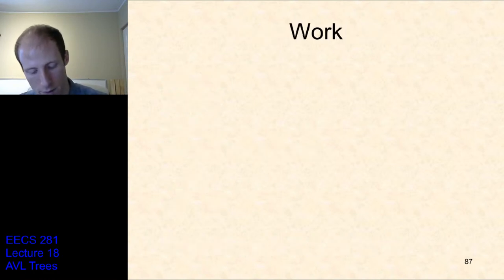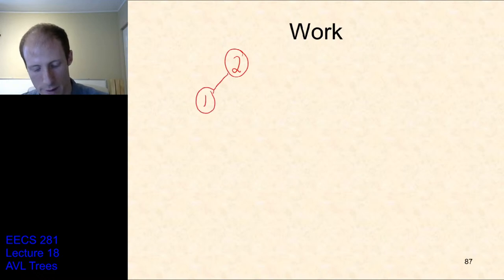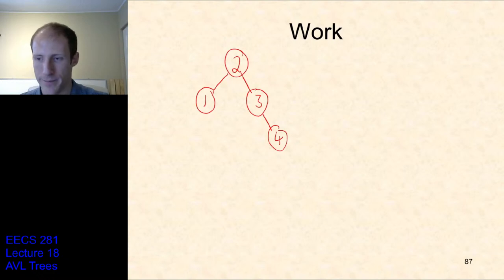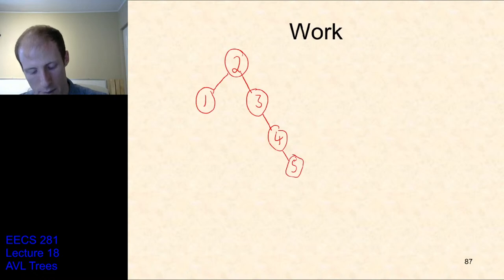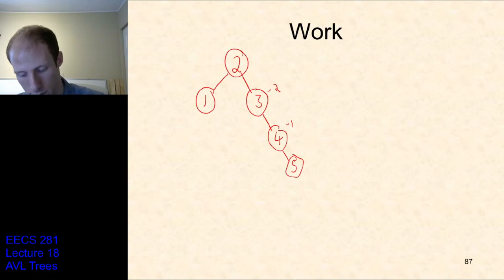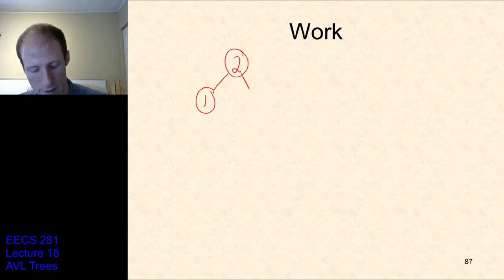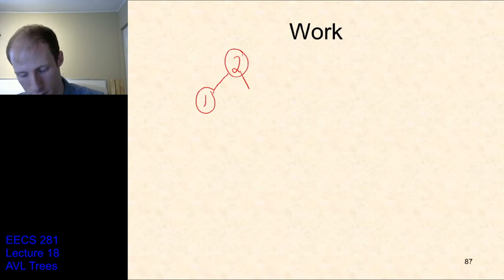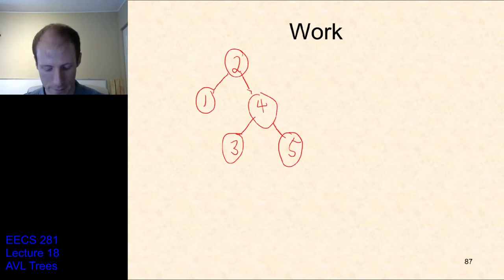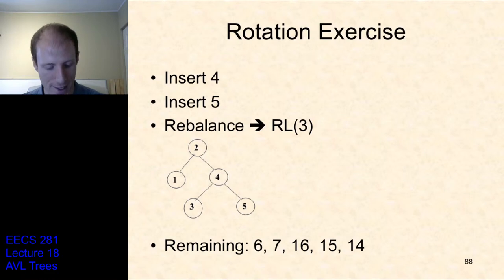Now we need to insert 4, 5, 6, 7. We insert 4 — everything is still balanced. We insert 5 — we see an imbalance: signs agree and it's negative, so a single left rotate. We do a left rotation and end up with 4 at the root, 3 on the left, and 5 on the right. Now we are balanced again.